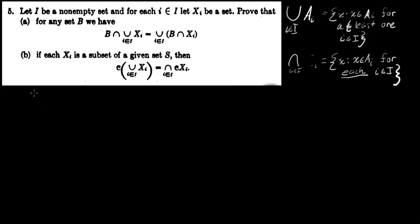We're on to 5b in our set theory chapter of Intro to Analysis by Rosenlicht. In this problem we're showing yet another set equality. We have this same notation that we've been talking about last time, and in Rosenlicht they have this definition too — this is A sub I. I wrote out these definitions from the book, and this is going to help us along in our proof, so we'll refer back to these.